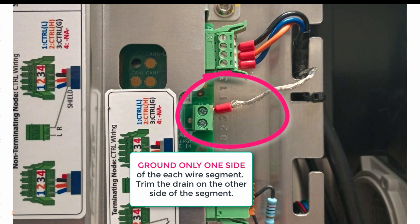To repeat this, each drain wire segment on the cable must only be connected to ground on one side and never on both sides.